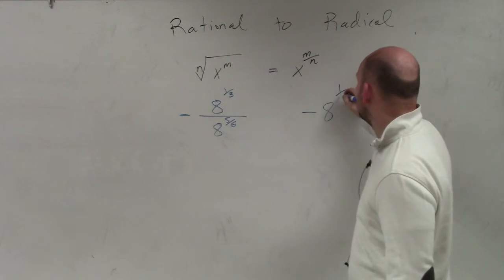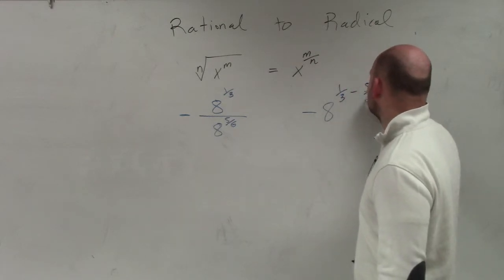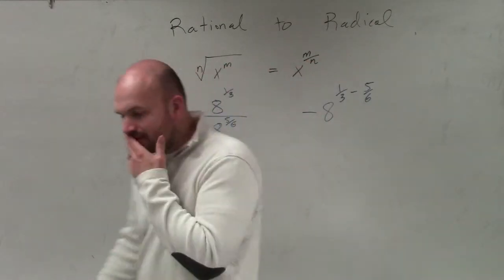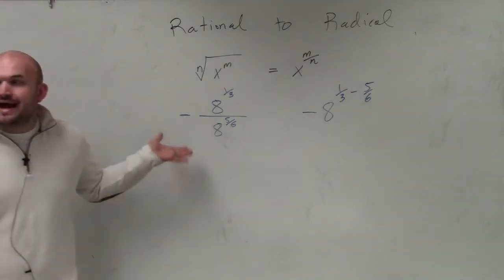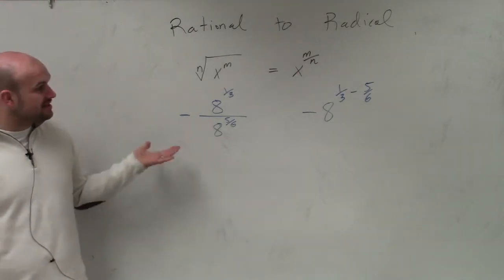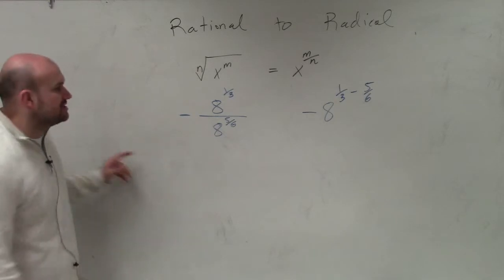And then we're simply going to subtract. So I'm going to have 1/3 minus 5/6. Now, a lot of times when I'm doing a problem like this, I know that subtracting or adding fractions, because you have to have the same denominator, is going to take a little bit of work. So I'm just going to do this kind of to the side.